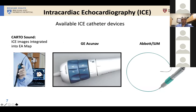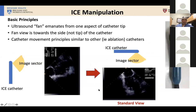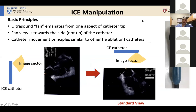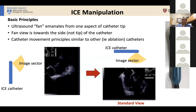Here are the available devices in the United States. Many of you are familiar with the CardoSound device, which is really an adaptation of the GE Acunav platform, and then Abbott St. Jude has their own device as well. I don't think there's a significant substantive difference between the two, though there are some important differences I'm happy to go over. I want to go over things in a generic principle sense to help you understand the principles and get you to that next level of using ICE in your EP workflow.